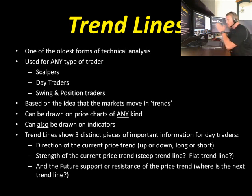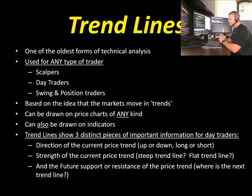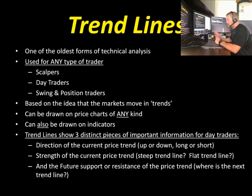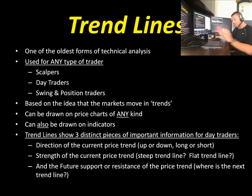Now, very important — if you learn one thing today from this video, this will be it. Trend lines give us three distinct pieces of information. As a day trader, we're always looking for feedback from the market, and a trend line is going to give me a lot of feedback. First of all, it's going to tell me the direction of the current price trend — is it up or down, long or short? That's the first thing the trend line tells me.